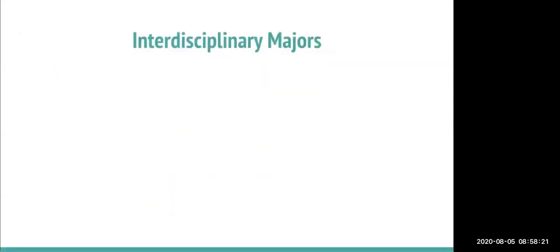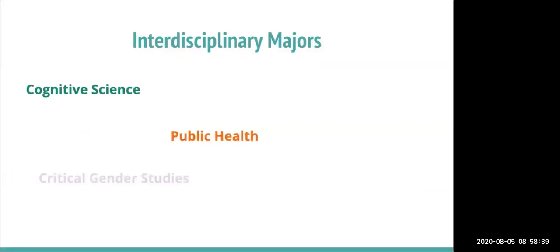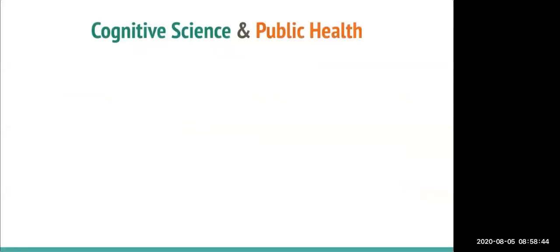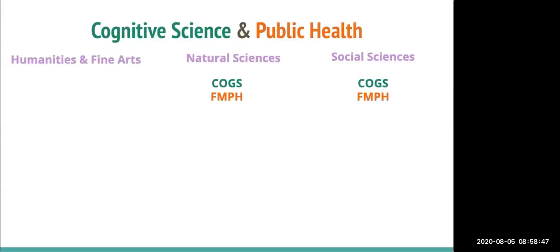Now we'll discuss interdisciplinary majors. There are three majors listed in two categories: cognitive science, public health, and critical gender studies. Cognitive science and public health are automatically categorized under the social science discipline but can also be categorized as natural sciences, math, and engineering. You have the option of keeping these as social science — requiring GEs in humanities and fine arts and natural sciences — or changing the discipline to natural sciences, requiring GEs in humanities and fine arts and social sciences.